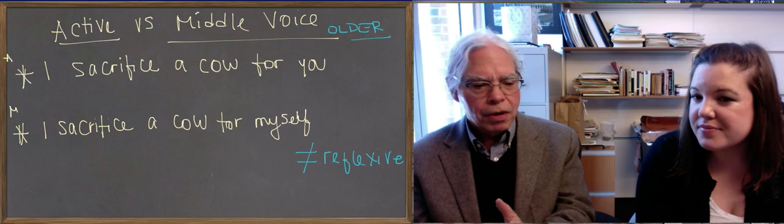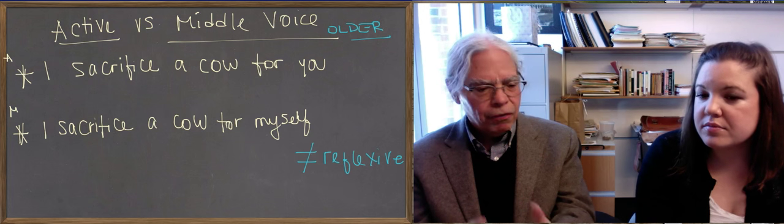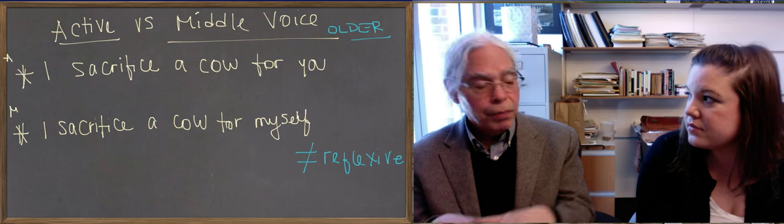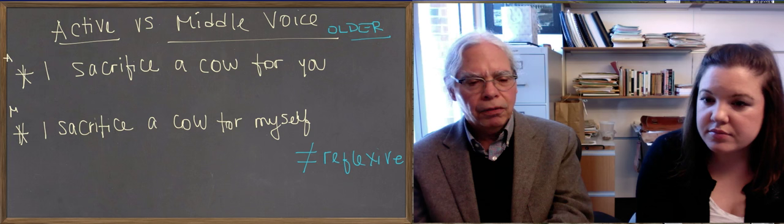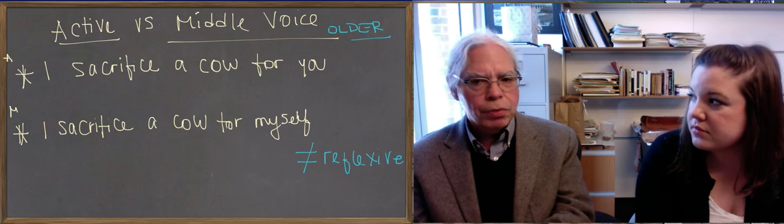And then there are two verb forms in which it's different. The future and the aorist have different forms for active, for middle, rather, and for passive. And all the other Greek verbs, forms of the Greek verb, they're identical. So, we're going to start out by learning the ones that are identical for active and middle. And then we're going to look at the ones in which you have separate passive forms.